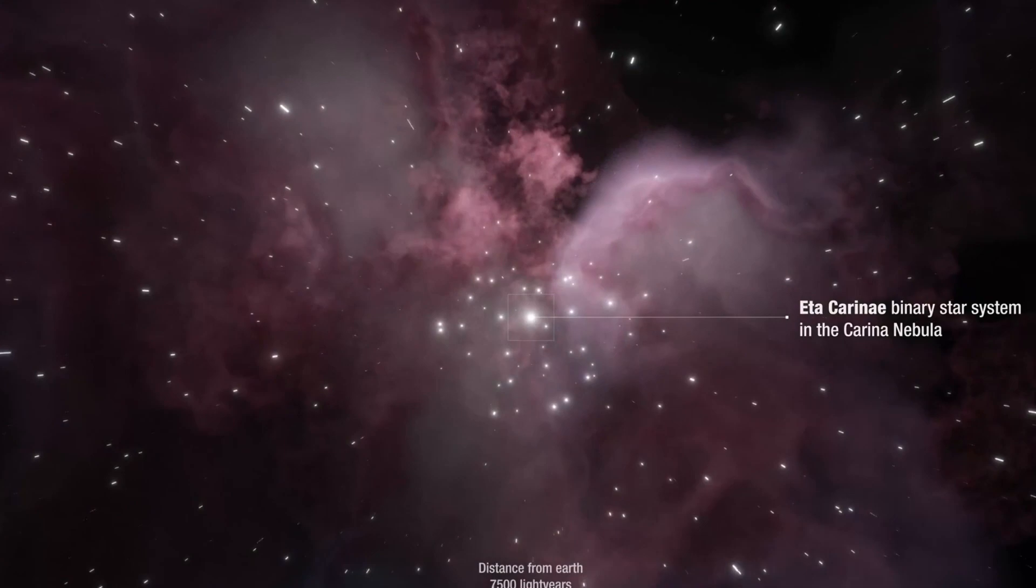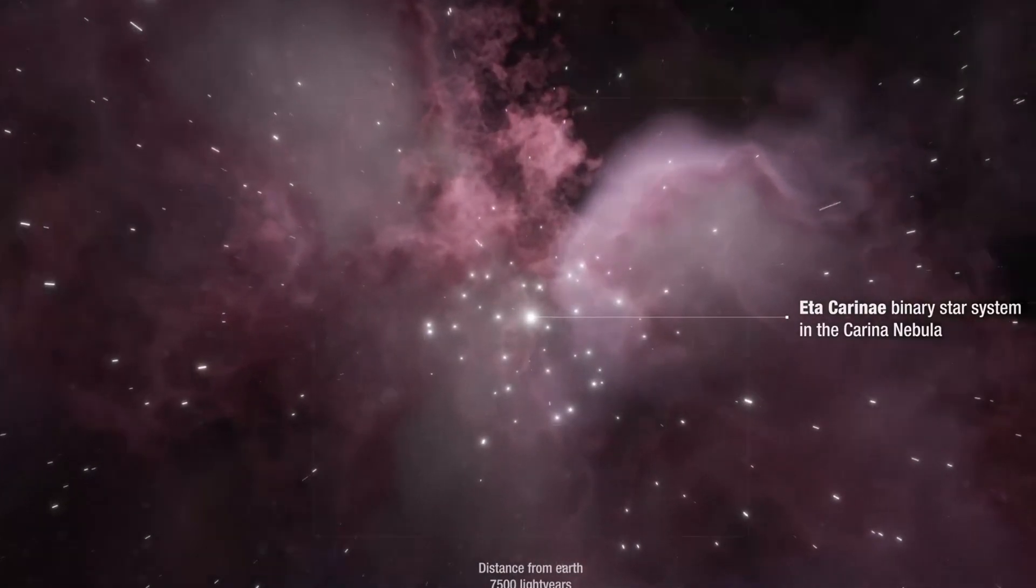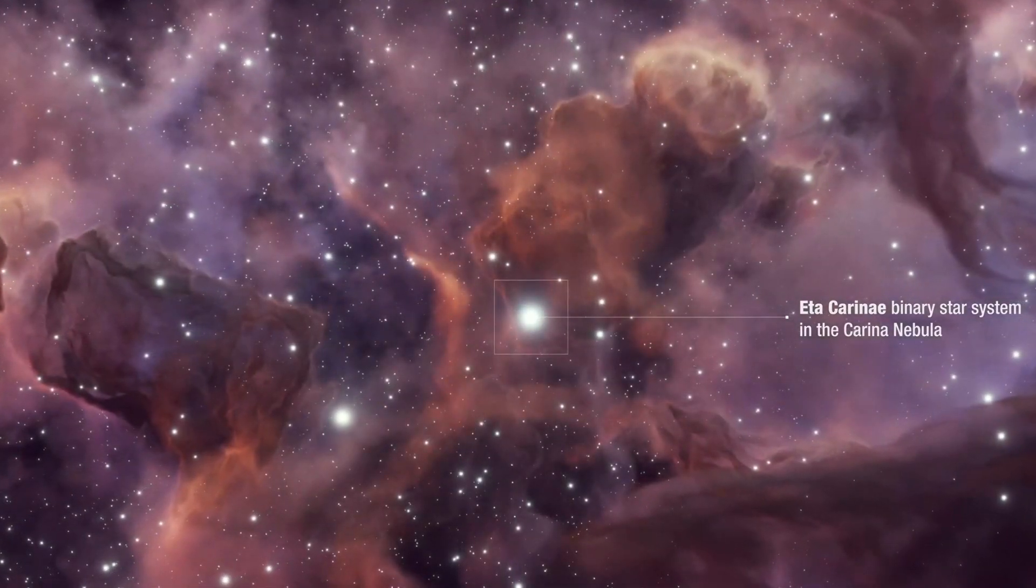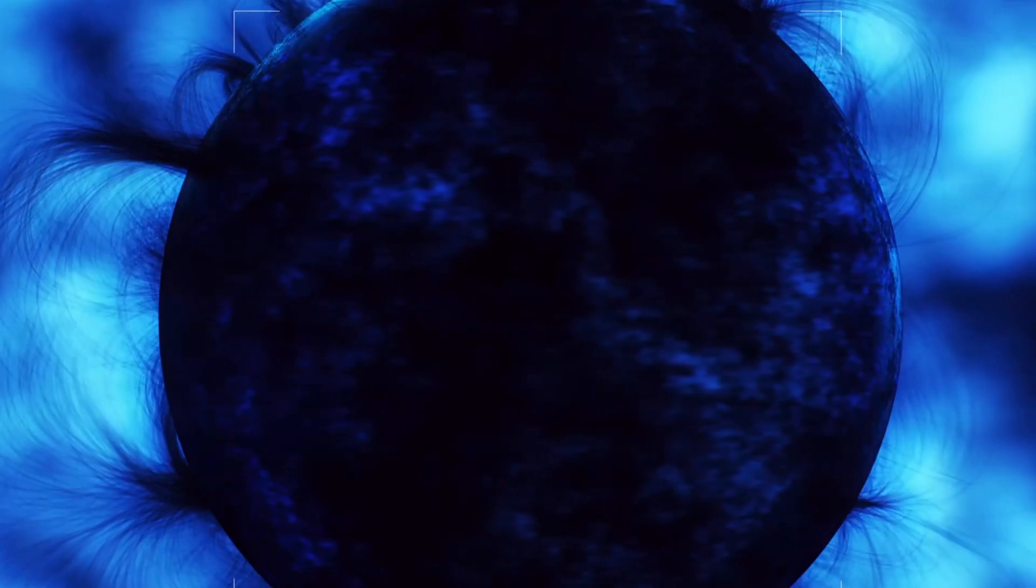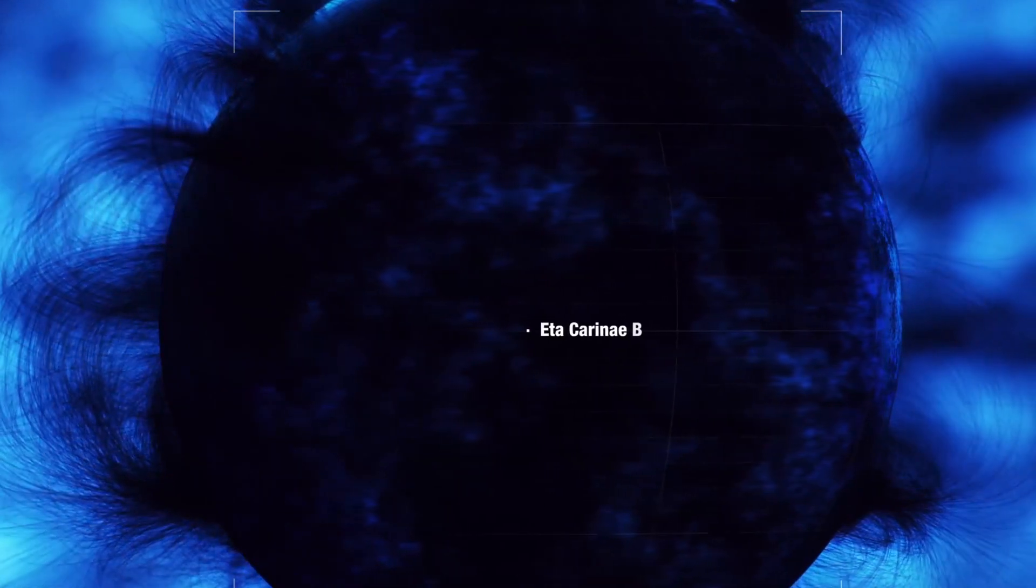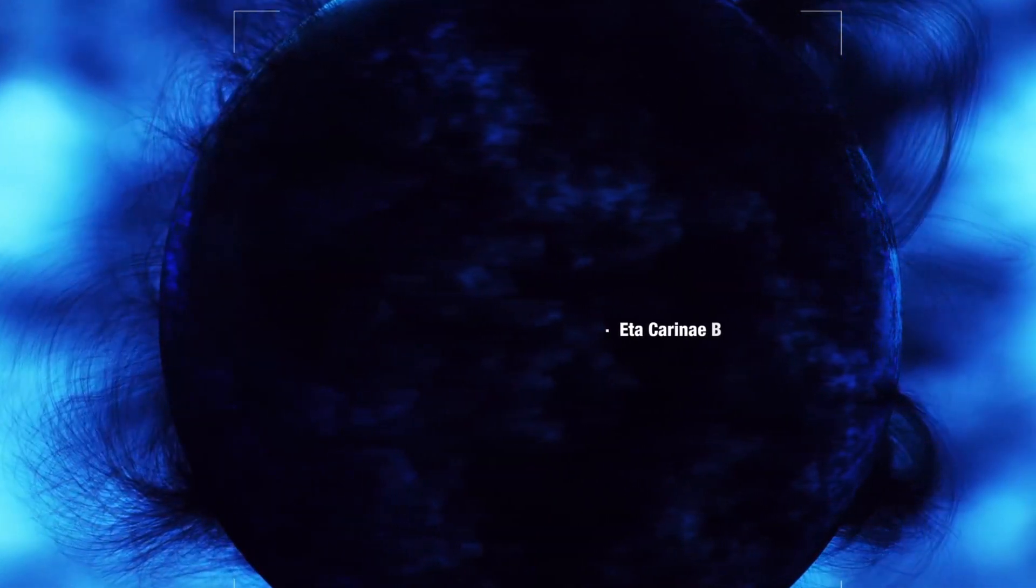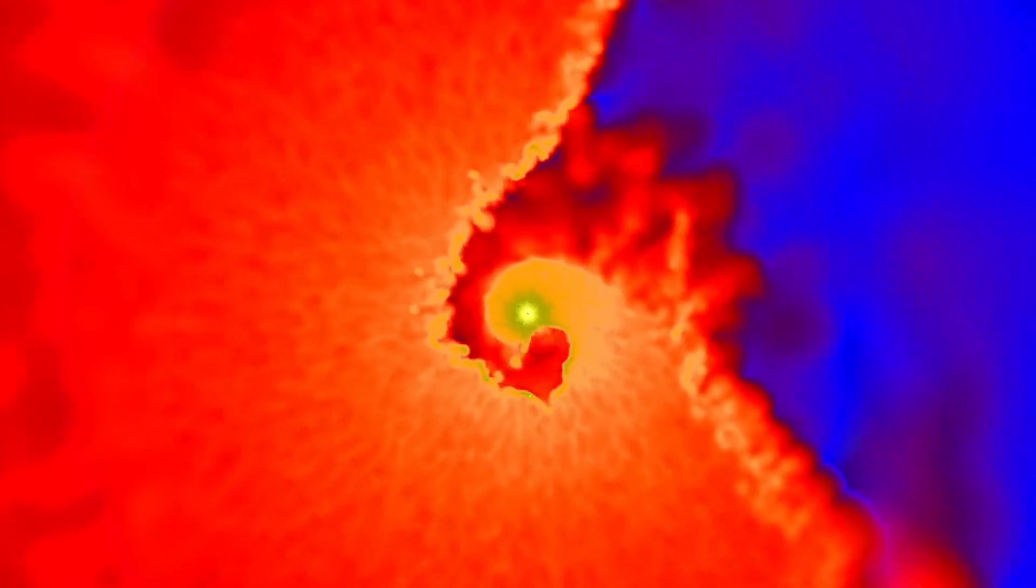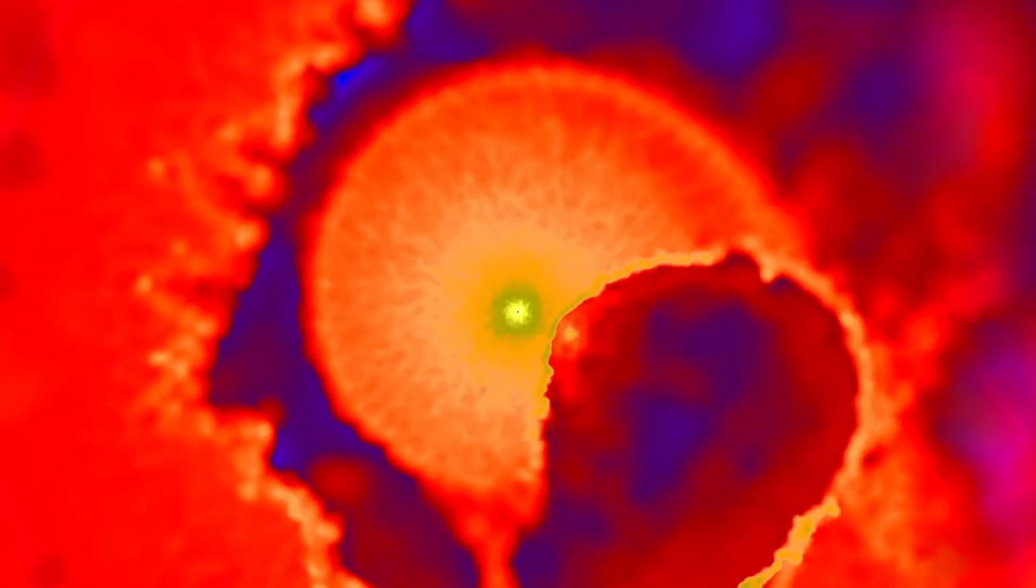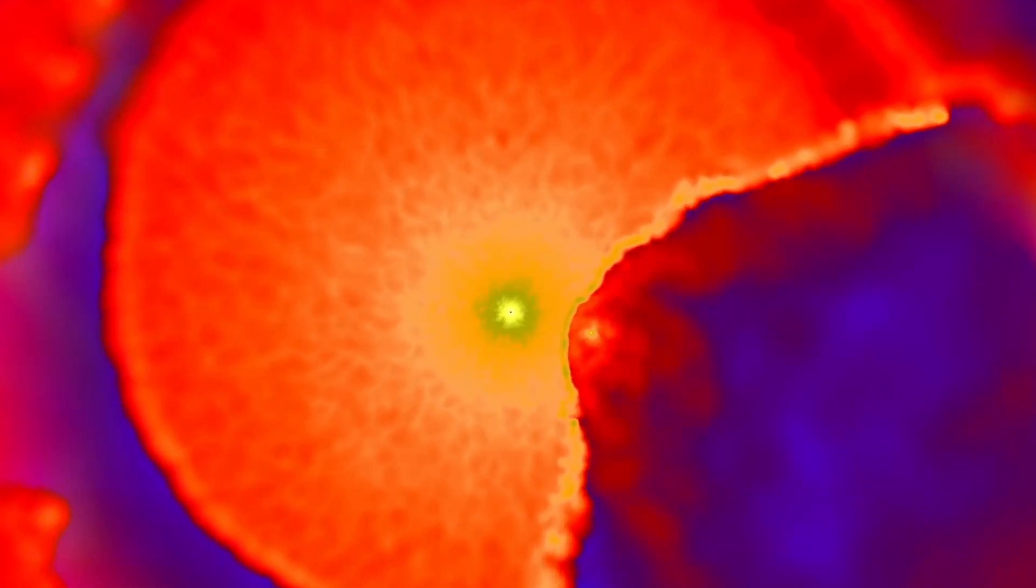The star was not particularly famous until 1843, when it suddenly became the second brightest star in the night skies. Over 150 years ago, it began the first of many eruptions that followed. Something inside the star system caused it to suddenly increase in brightness, throwing off huge amounts of material, creating the homunculus nebula. This is an extremely powerful process, unbelievably powerful.